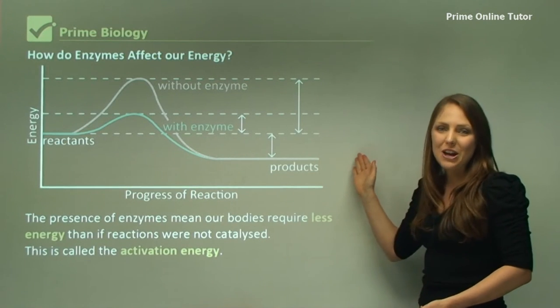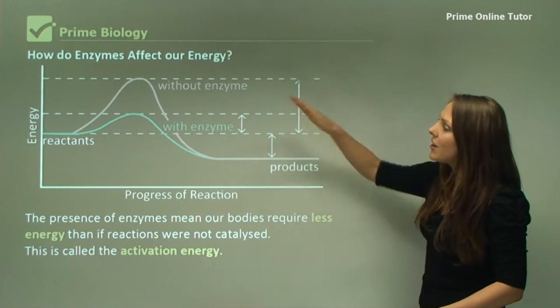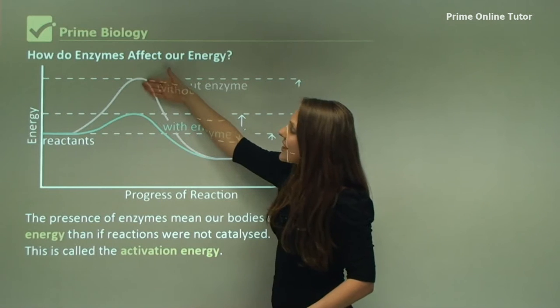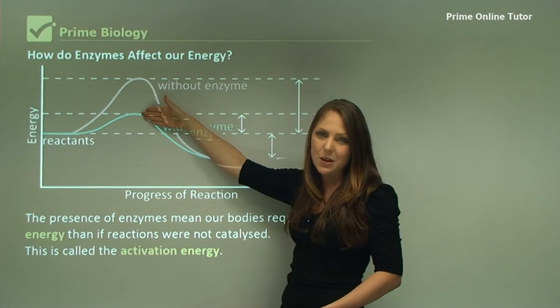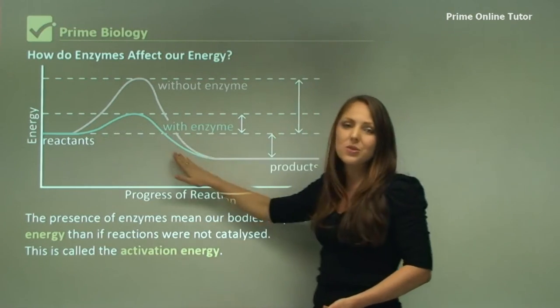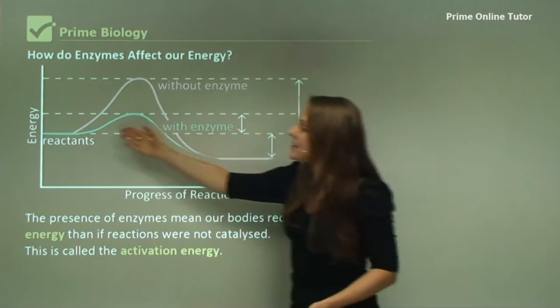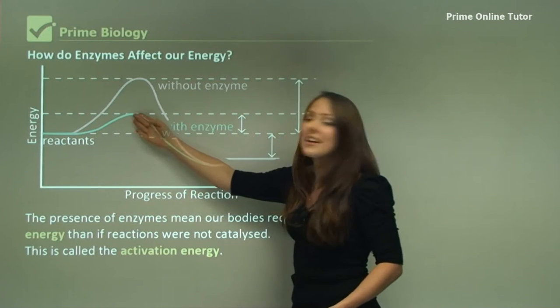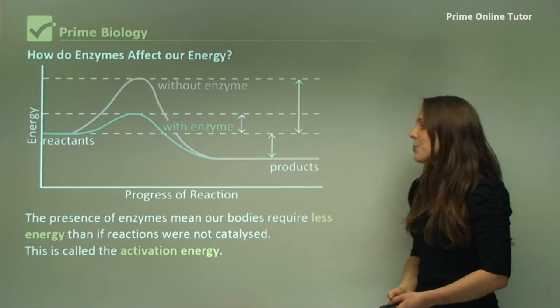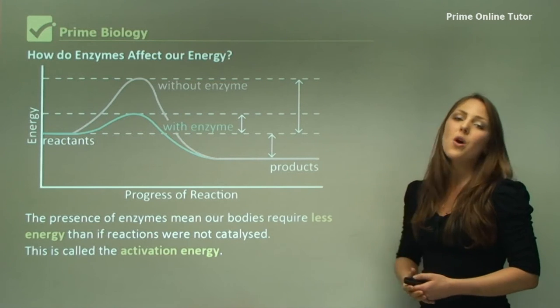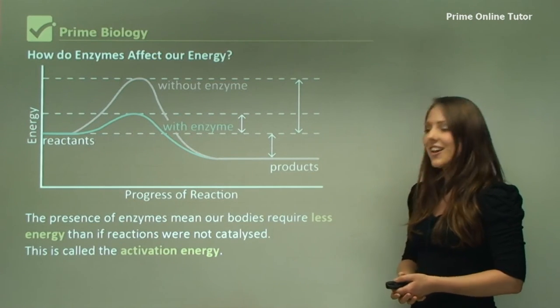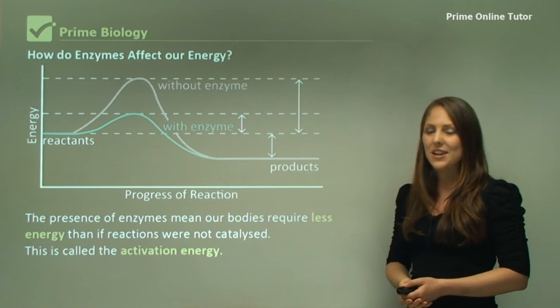This here is a similar diagram as before. The pink line represents without an enzyme. That's the amount of activation energy that we need, that's extra for a spontaneous reaction. The blue line shows with an enzyme. You can see that the energy needed is lower than without an enzyme. So the presence of enzymes mean our bodies require less energy than if the reactions were not catalyzed. This is called the activation energy.